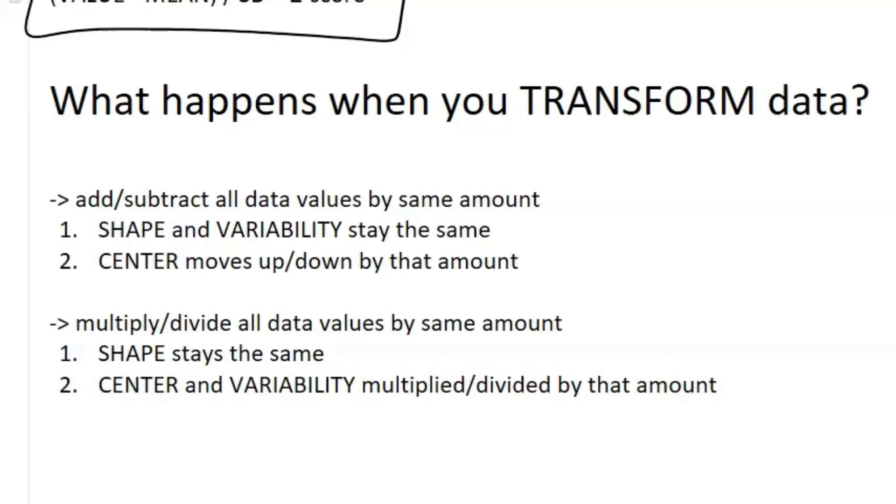Well, here is a summary of what would happen. So if you added or subtracted all the data values by the same amount, the shape and variability will always stay the same. The center, so that's like your mean or median, will move up or down by that amount.